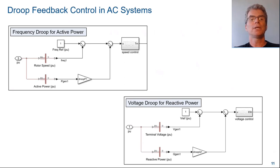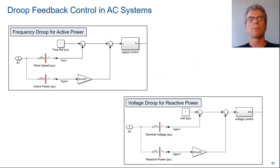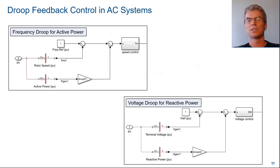Here is the basic architecture for group control in an AC system. For frequency droop, we offset the frequency reference by subtracting active power multiplied by a droop value. For voltage droop, we offset the voltage reference by subtracting reactive power multiplied by a droop value.